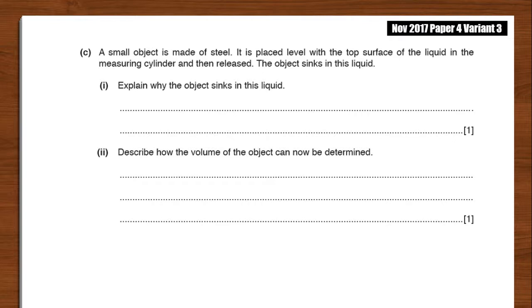A small object is made of steel. It is placed level with the top surface of the liquid in the measuring cylinder and then released. The object sinks in this liquid. Explain why the object sinks in this liquid. Describe how the volume of the object can be determined.